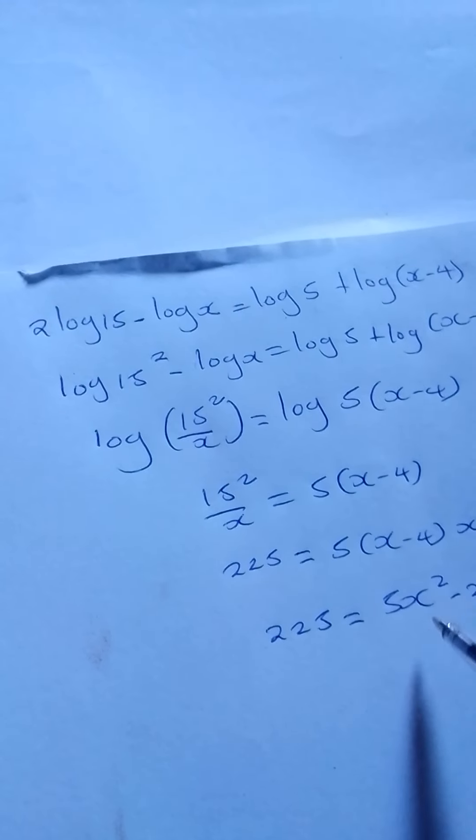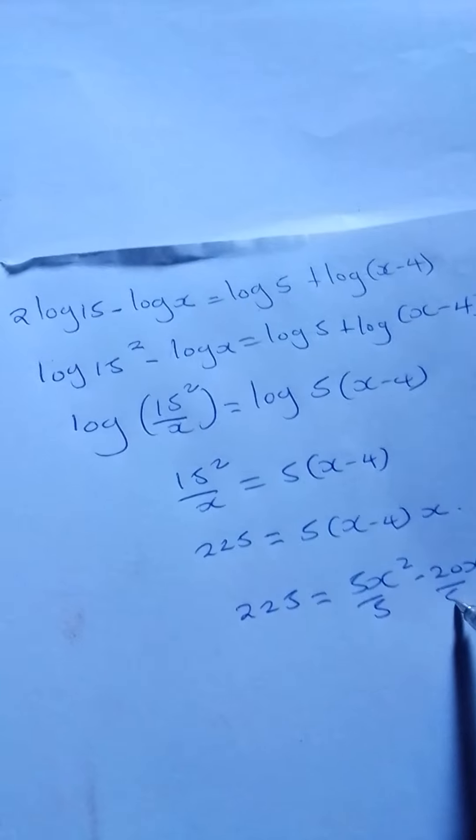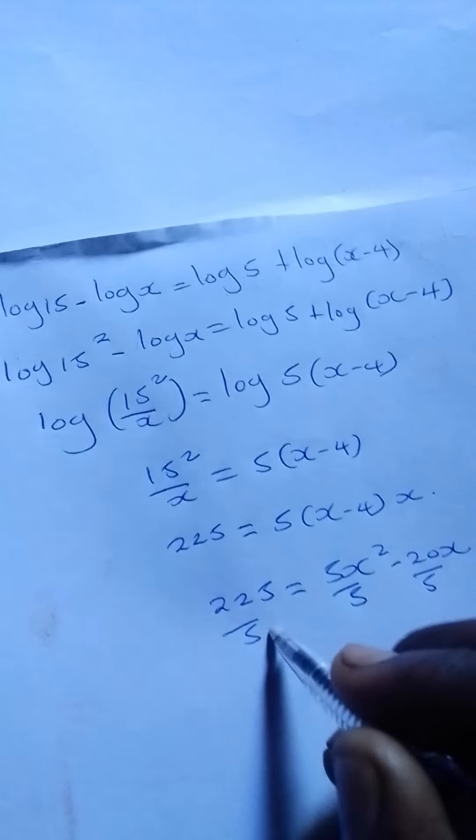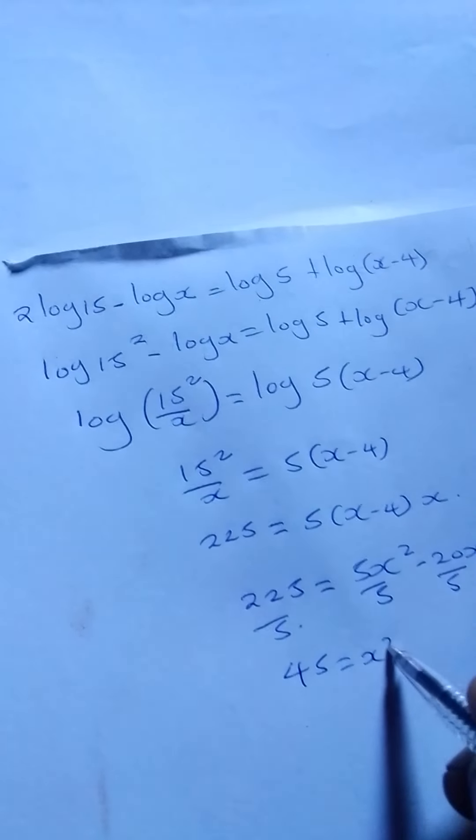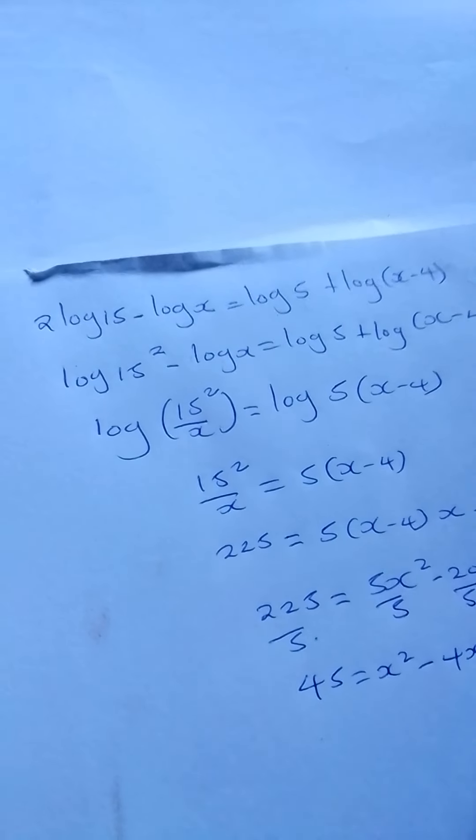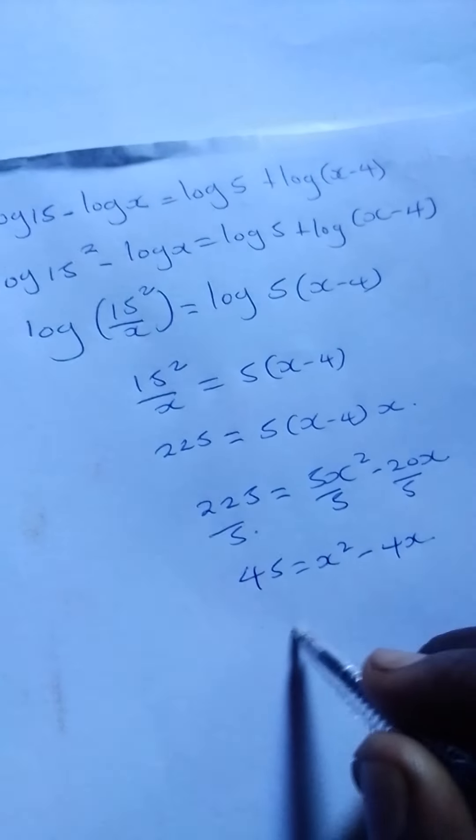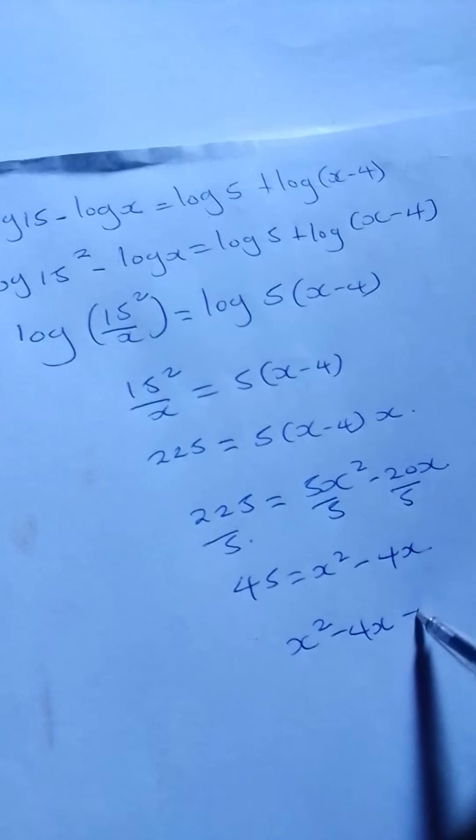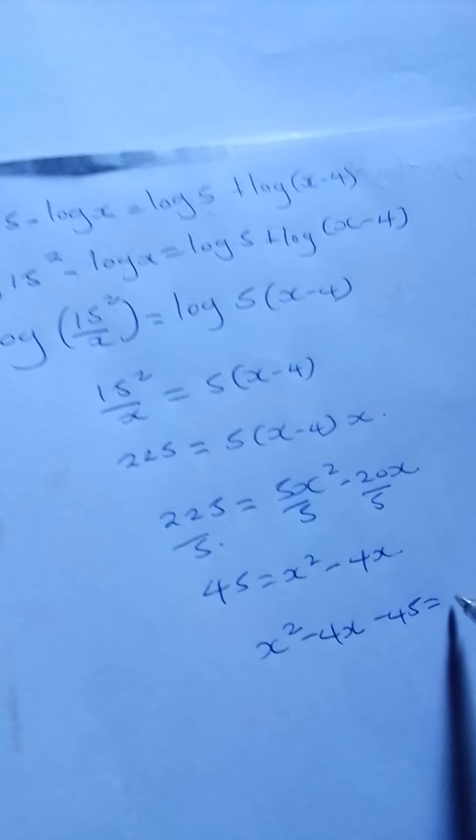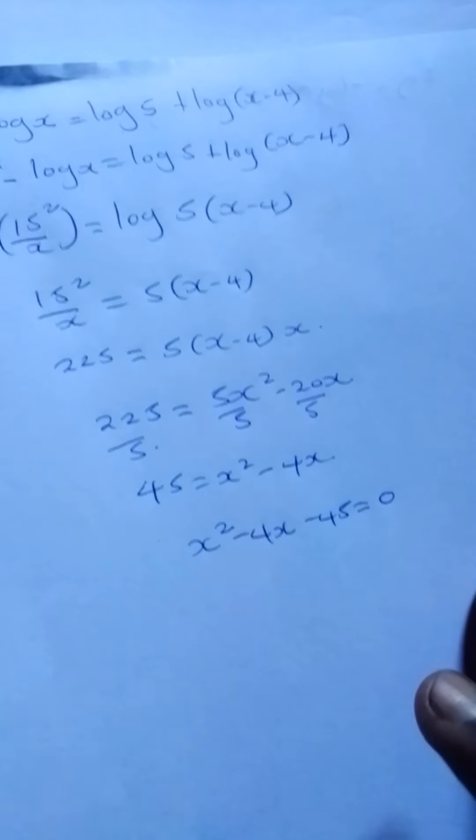We can divide by 5 on both sides, giving us 45 = x² - 4x. Then we rewrite it as x² - 4x - 45 = 0. This is a quadratic equation.